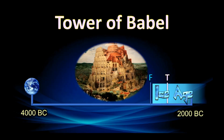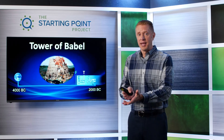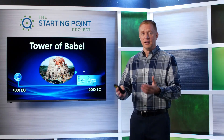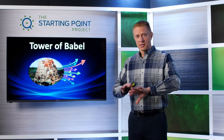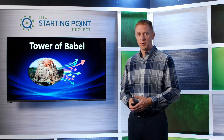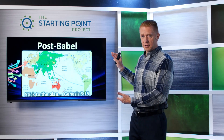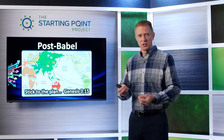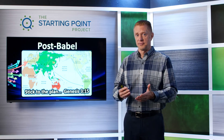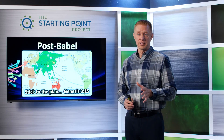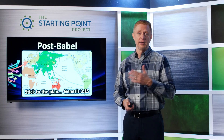Then we have the Tower of Babel. Noah and his family came off the ark and were commanded to procreate and fill the earth, but they didn't — they stayed in one area, building a tower in rebellion against God. So God confused their language and forced them to spread out and fill the earth. We looked at a secular diagram of how they envisioned people filling the planet, which is actually pretty accurate — coming generally out of the Middle East, closer to Turkey. At this point we have random people all over the planet, but God is going to stick to his plan from Genesis 3:15 — sending his son to die on a cross. The entire Old Testament is God working out that plan.